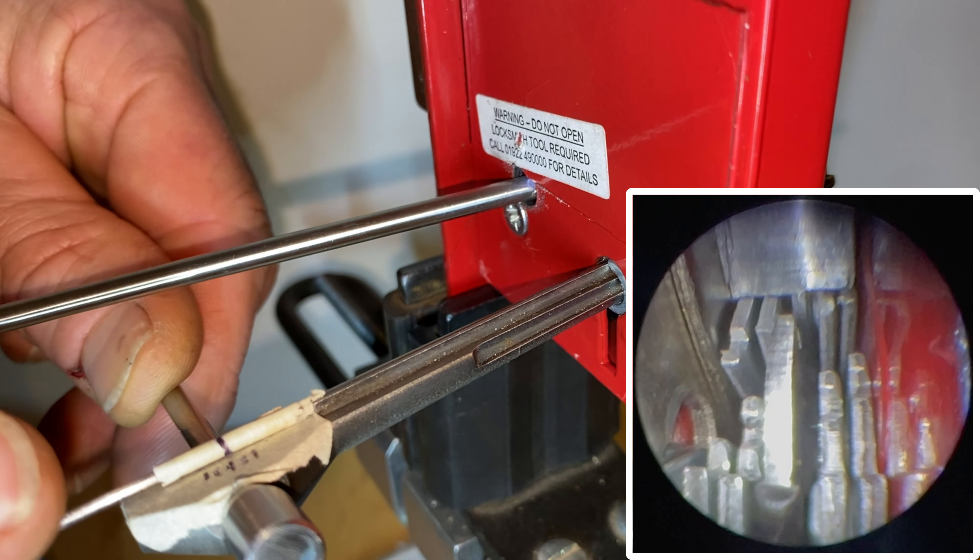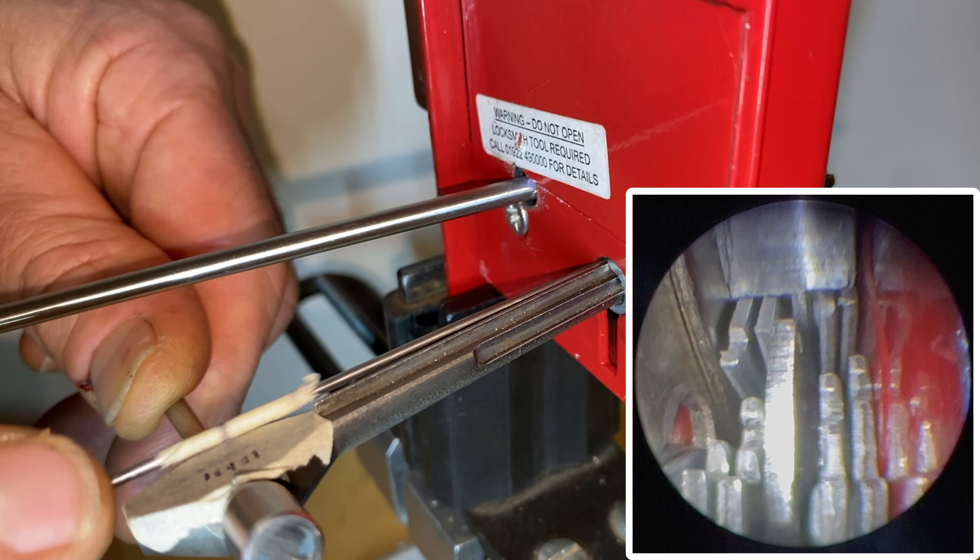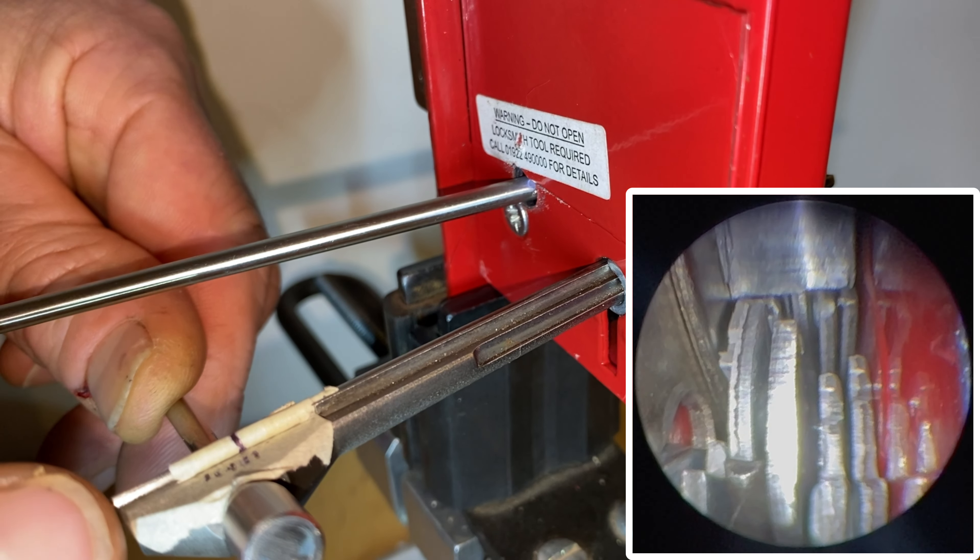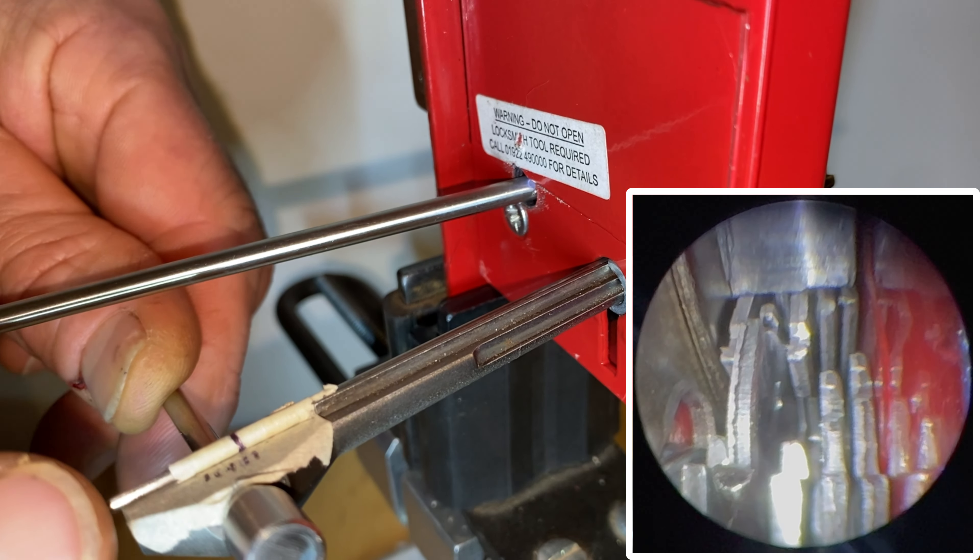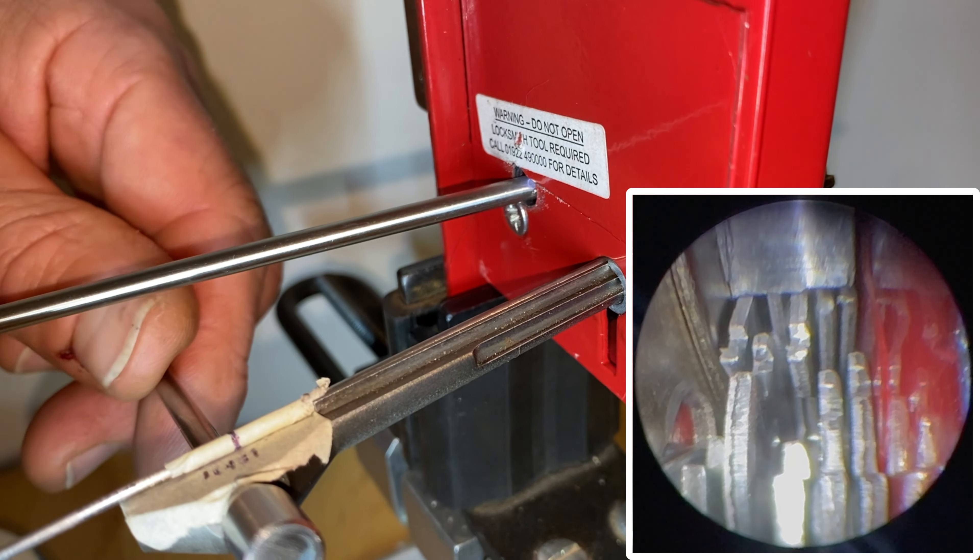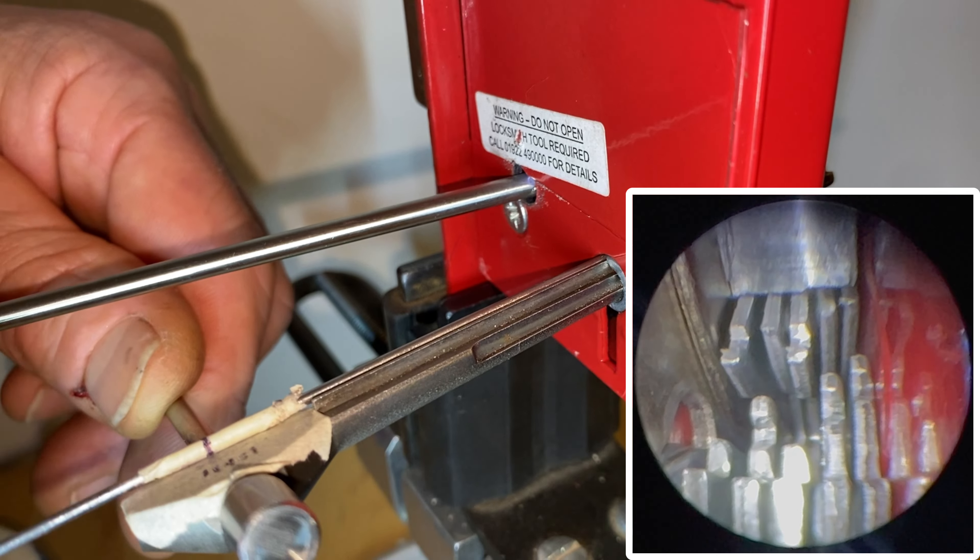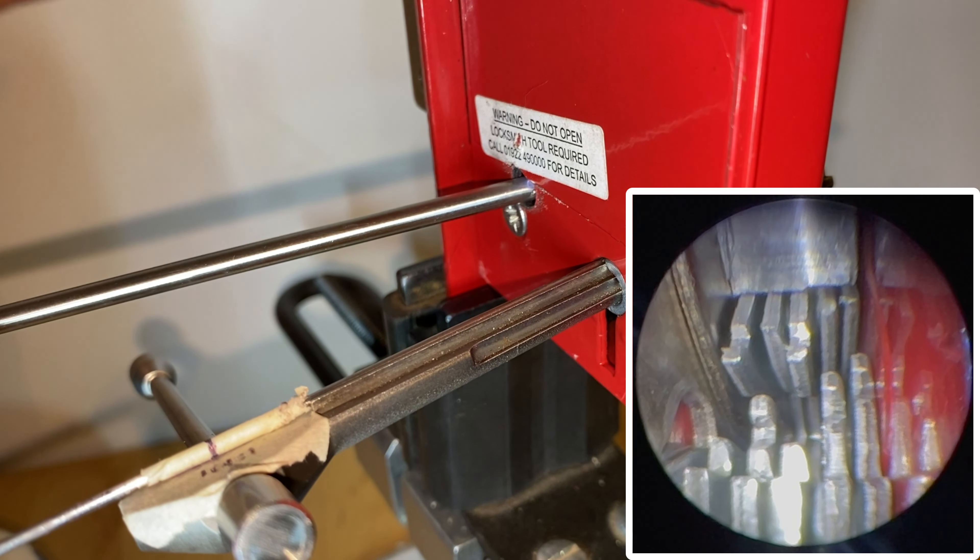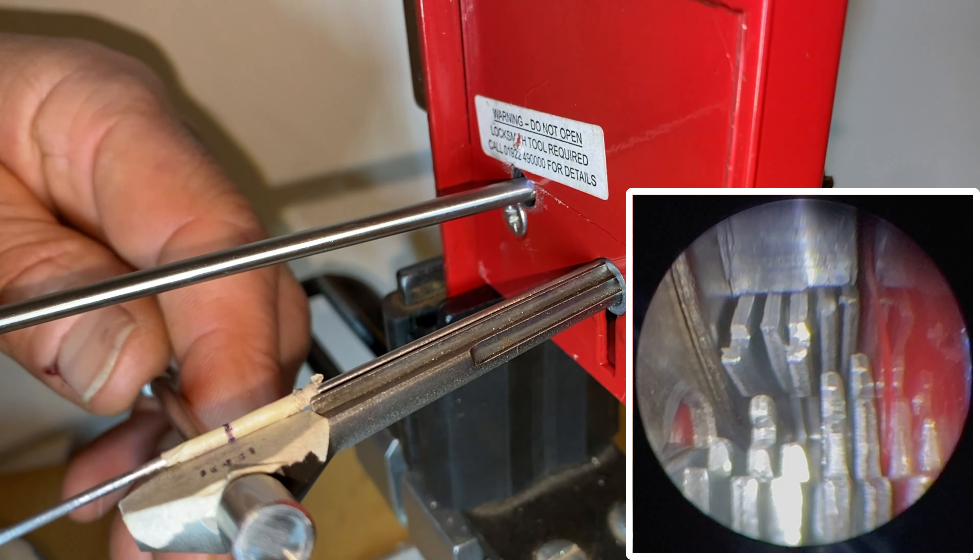When you have a lever that's partially binding and then you try to lift another one that's further up in the binding order, what tends to happen is that lever will drop when the other lever sets, and so you start chasing your tail lifting levers. But if you pay attention to the ones that are staying up, you'll get a good idea of what the binding order is.